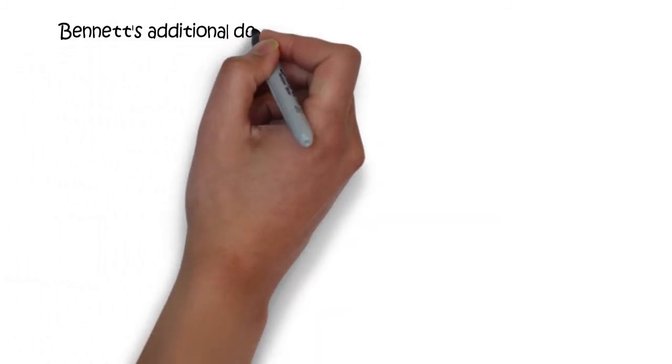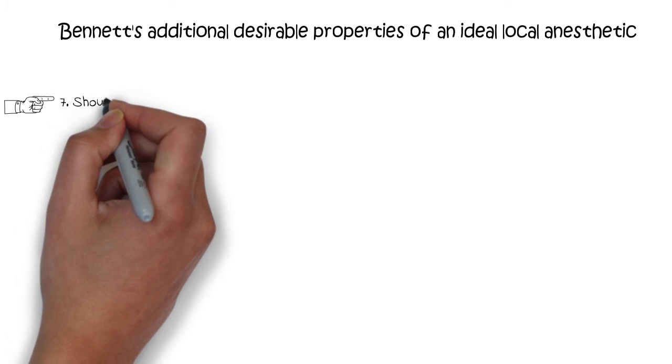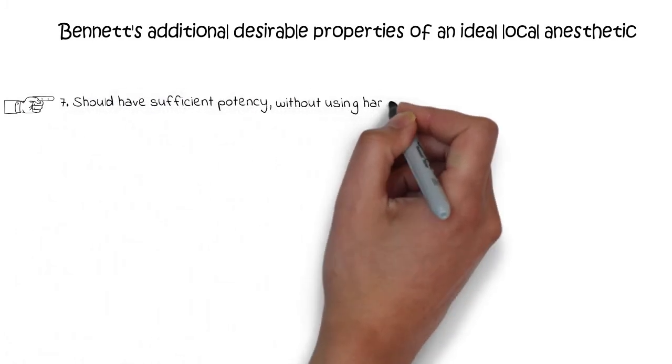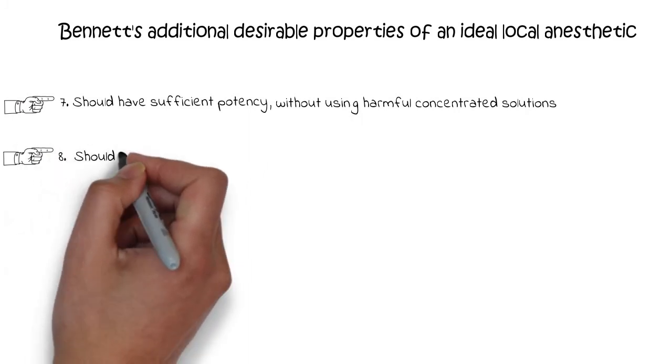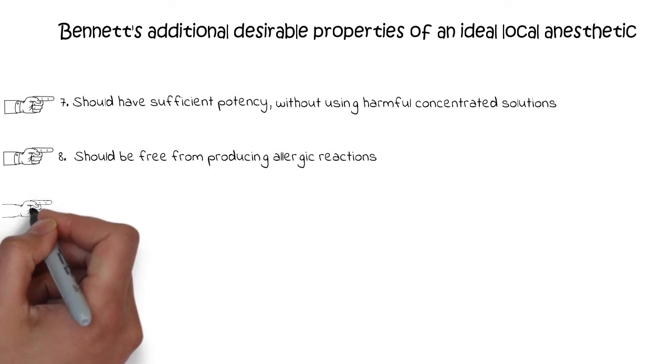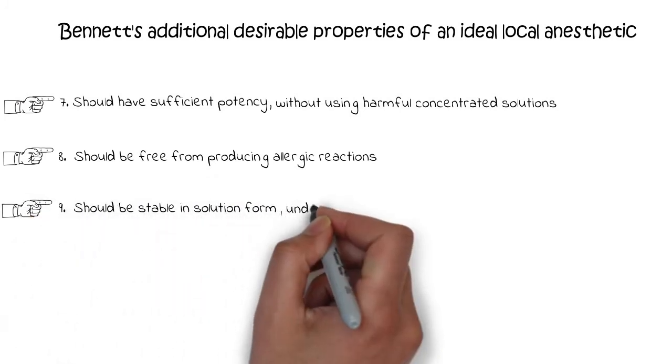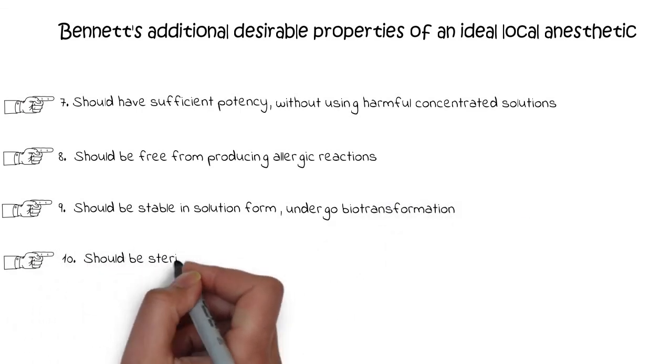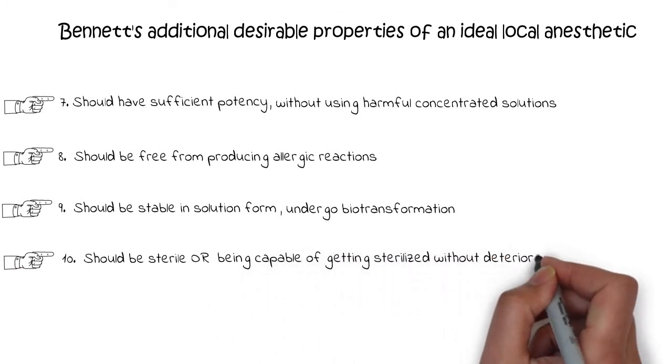Apart from these six properties, there are four additional properties that were discussed by Bennett. The local anesthetic must have potency sufficient to provide anesthesia without using harmful concentrated solutions. It should be free from inducing allergic reactions. It should be stable in solution form and should also undergo biotransformation in the body. And lastly, it should be sterilized or be capable of getting sterilized by heat without undergoing deterioration.